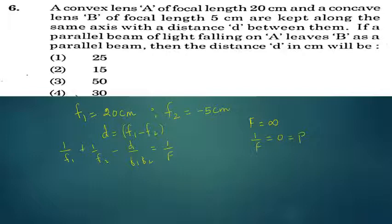So 1 by f1, 1 by 20, plus 1 by f2, 1 by minus 5, minus d by f1 f2, minus 20 into minus 5, is equal to 1 by infinity. 1 by f1, 1 by f2, minus 1 by f2...